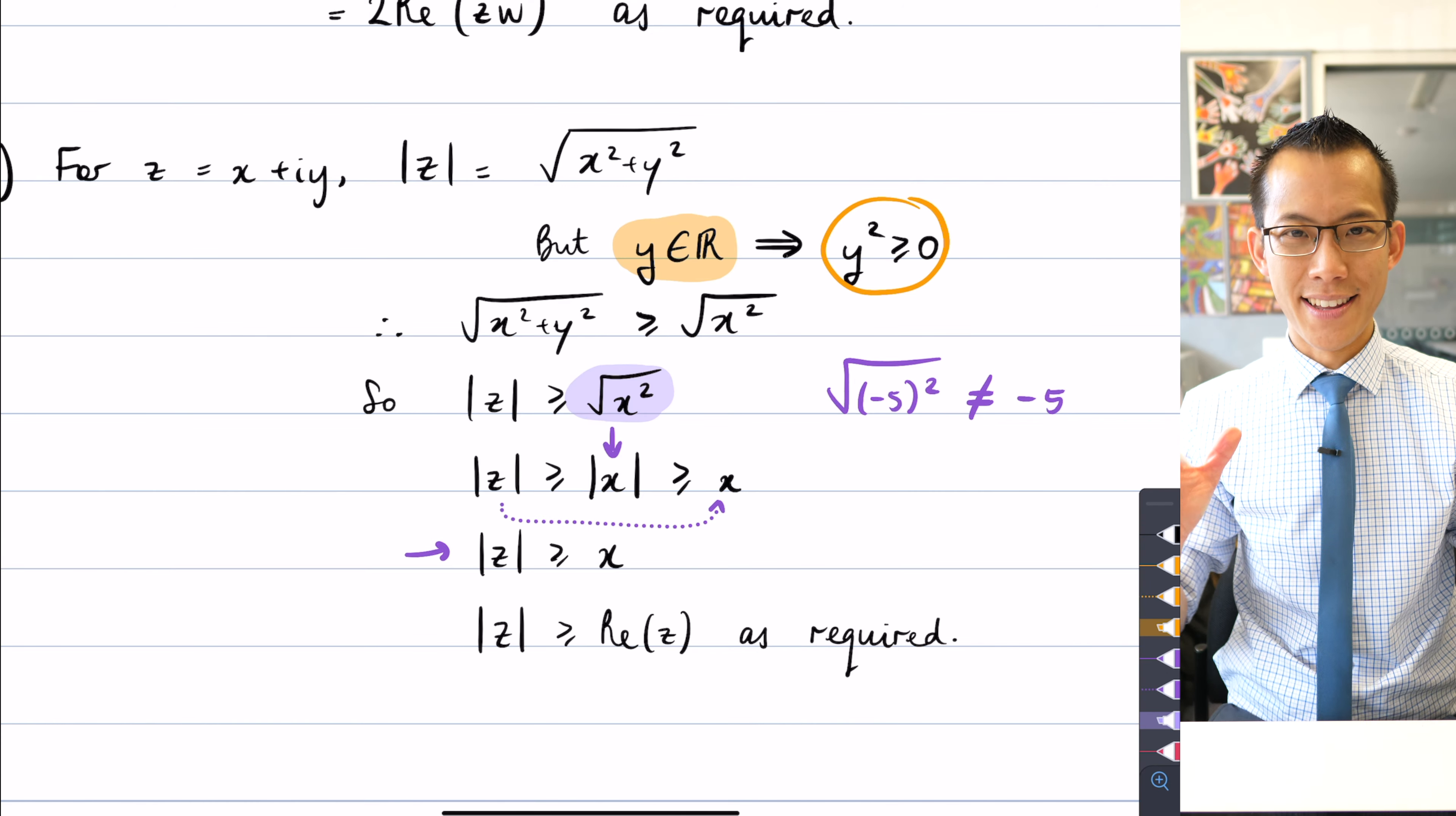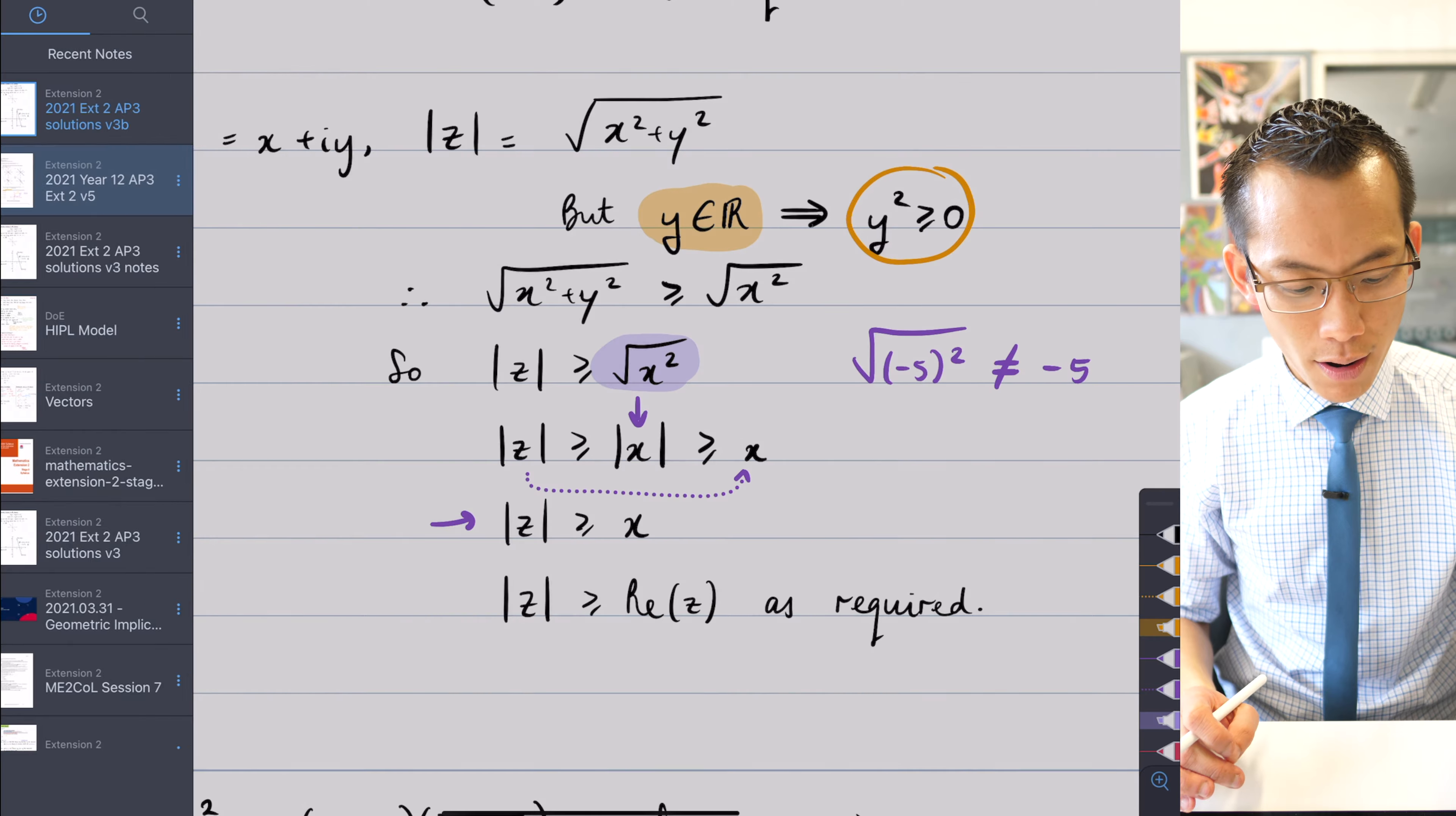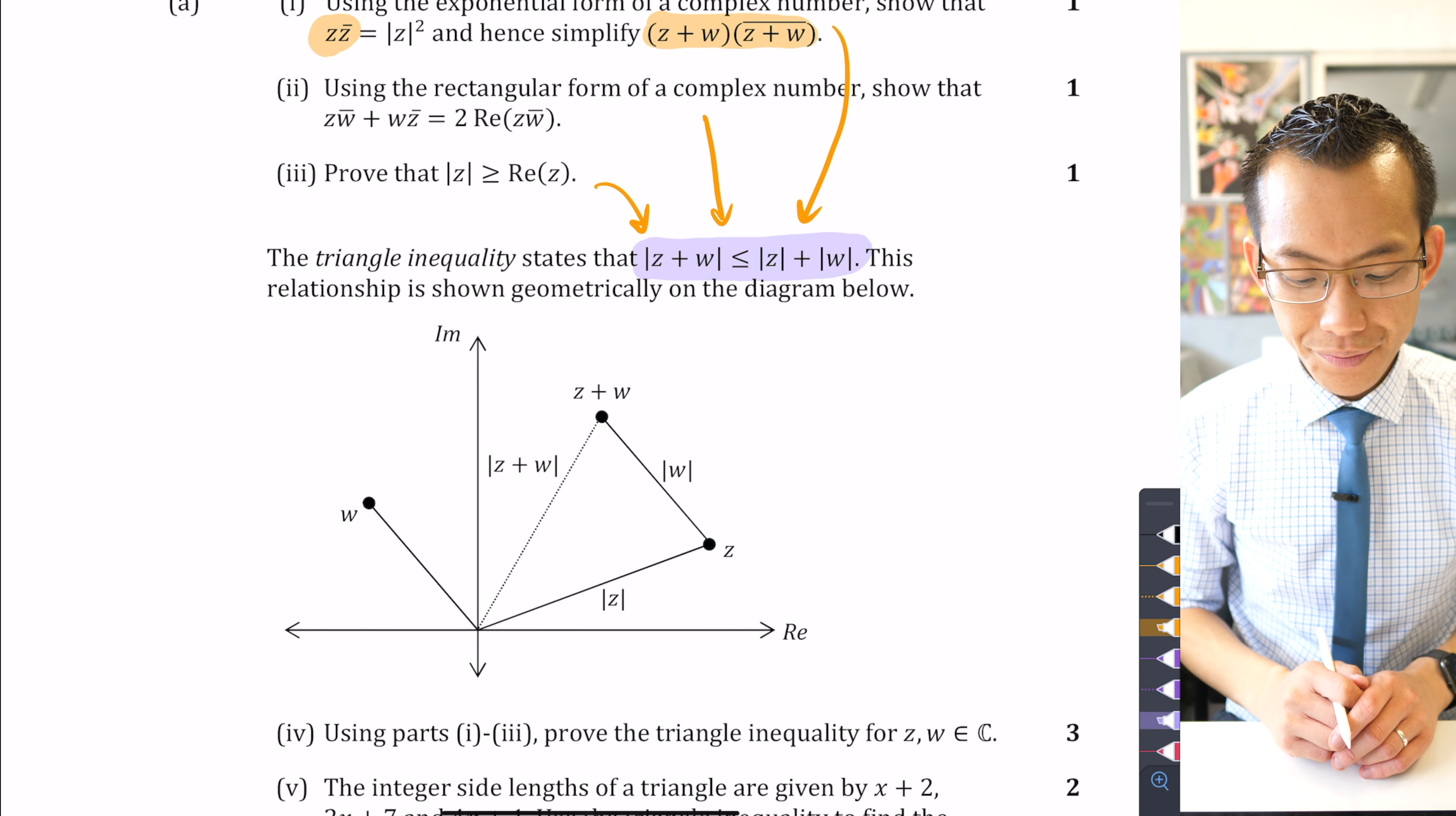So that was part three. At last, we have laid all the foundations. What was the point of proving all these results? We're going to use all three of them when we do this proof of the triangle inequality.